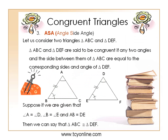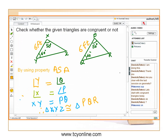Let's learn the third method of congruent triangles. The third method is ASA, that means Angle-Side-Angle. Two triangles are congruent if two angles and the included side of one triangle are equal to two angles and the included side of the other triangle. Now let's see the triangles in the picture — triangle ABC and triangle DEF. Here angle A equals angle D, angle B equals angle E, and side AB is equal to side DE. Therefore by ASA, we can say that triangle ABC is congruent to triangle DEF.